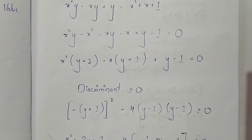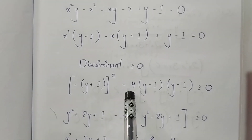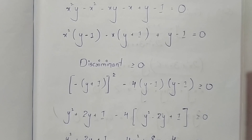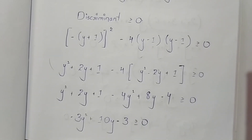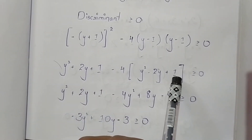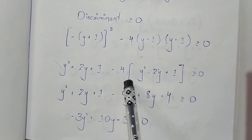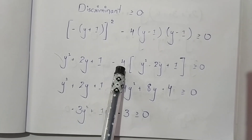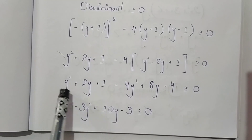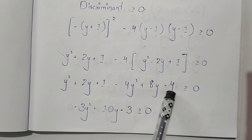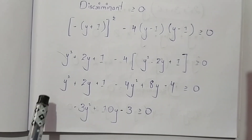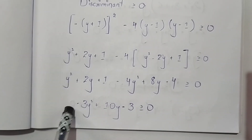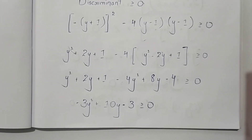Substituting the values: [-(y+1)]² - 4(y-1)(y-1) ≥ 0. Expanding gives (y² + 2y + 1) - 4(y - 1)² ≥ 0, which becomes (y² + 2y + 1) - 4(y² - 2y + 1) ≥ 0. Solving: y² + 2y + 1 - 4y² + 8y - 4 ≥ 0, giving -3y² + 10y - 3 ≥ 0. Taking minus as common: 3y² - 10y + 3 ≤ 0.